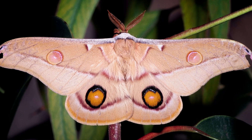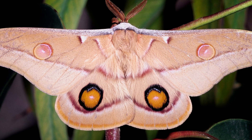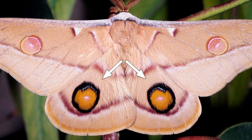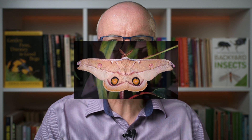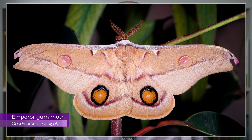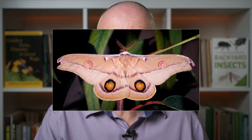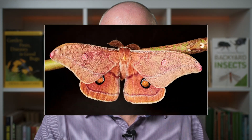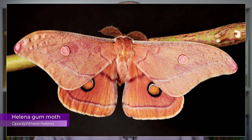The adult moths are large, spectacular insects with eye spots on their wings. The eye spots on the hind wings are particularly prominent. The moths can have a wingspan of up to about 150 millimeters, so they are pretty big insects. The emperor gum moth can vary in color from gray to light brown to reddish brown, while the helena gum moth is brown to orange brown.